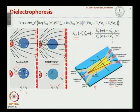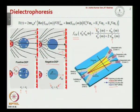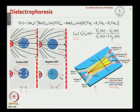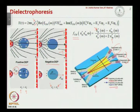The Clausius-Mossotti factor will have different signs depending on whether the particle permittivity or the medium permittivity is higher, and this has been utilized to separate particles. Two different particles in a sample exhibit different dielectric forces: one type exhibits positive DEP, tending to go towards higher electric field gradient, and the other exhibits negative DEP, tending to go towards lower electric field gradient. The dielectrophoretic force can also separate particles based on size, since larger particles experience higher DEP force.